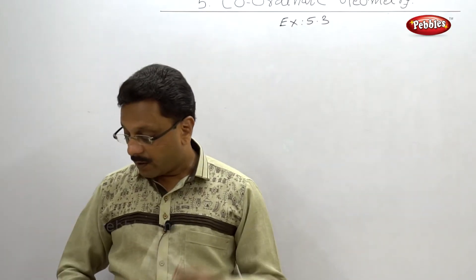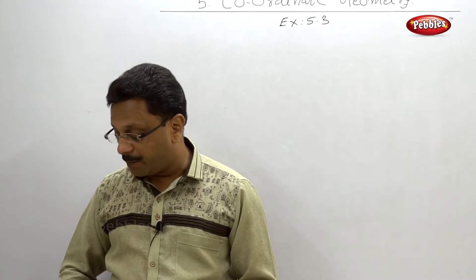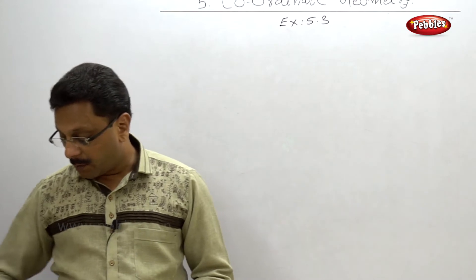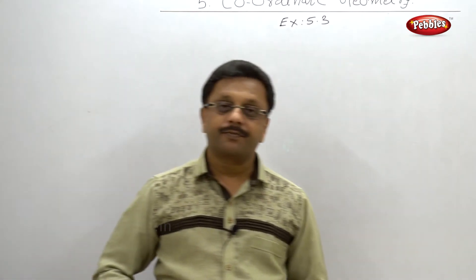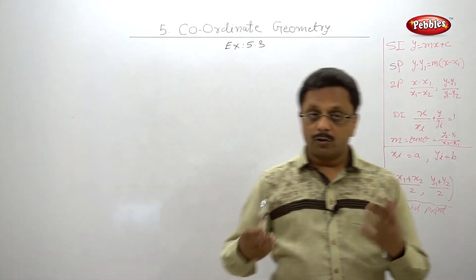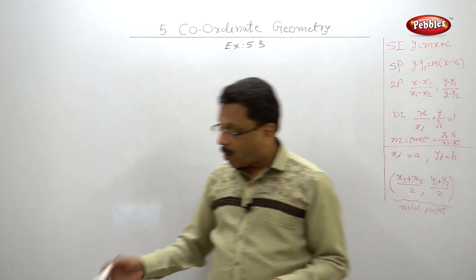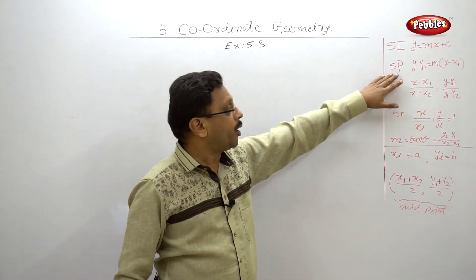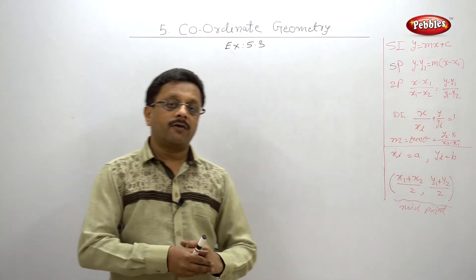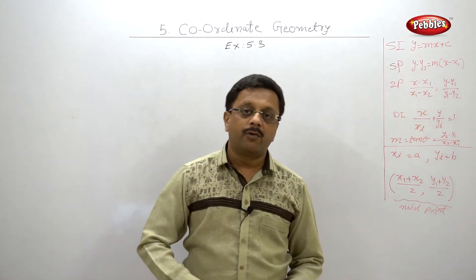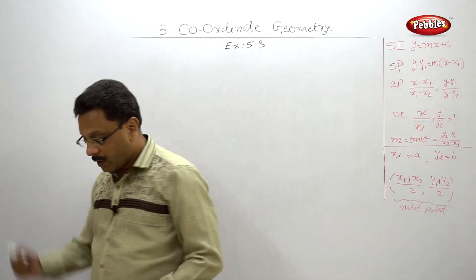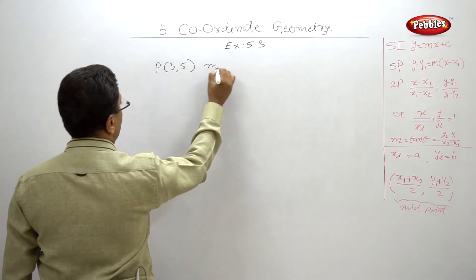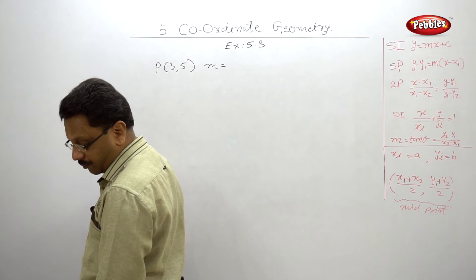Fourth example: write the equation of the line passing through the point P and having slope m. Multiple points and slopes are given. This example is of which type? The point is given and the slope is given, so this is of the type slope-point form. And our formula is y − y₁ = m(x − x₁). Let us solve one example: P(3, 5) and slope = 2.